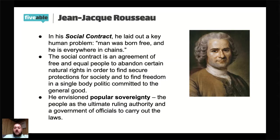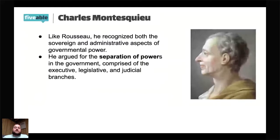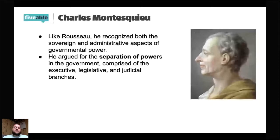Quick review: Locke is natural rights; Jean-Jacques Rousseau is the social contract. Now, Montesquieu. Like Rousseau, he agrees with the idea of the social contract. What sets Montesquieu apart is that he argues for the separation of powers in government. He doesn't feel all the power of government should be in the hands of one person — like a monarch. He proposes there should be an executive, a legislative, and a judicial branch among which power is separated.